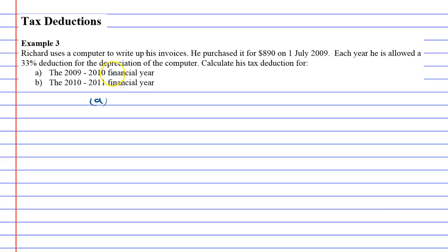So all we're going to do is what we normally do: we take our percentage, we divide it by 100, and we times it by the amount. So the computer's worth $890, so we're going to take 33% of that. 33 divided by 100 times 890.